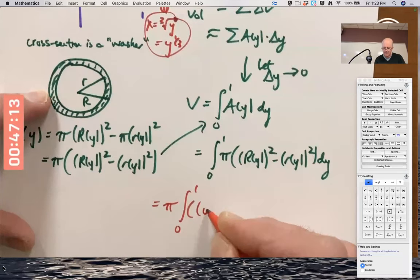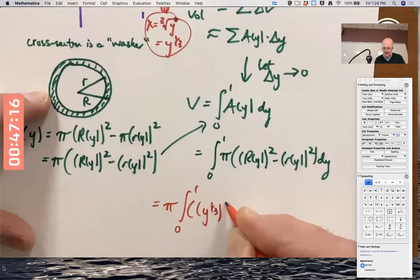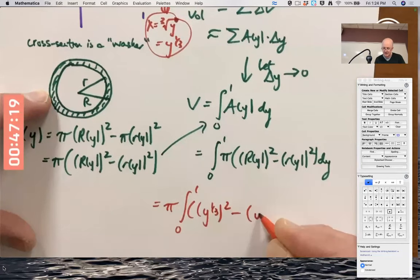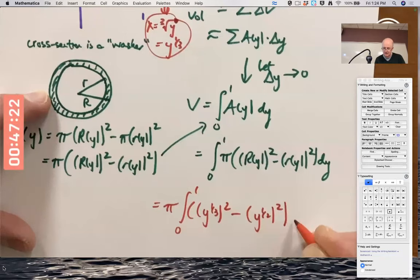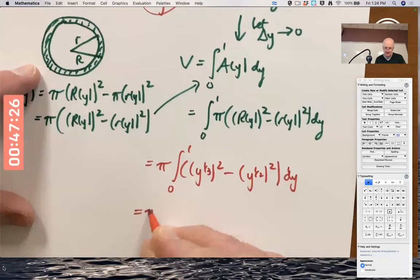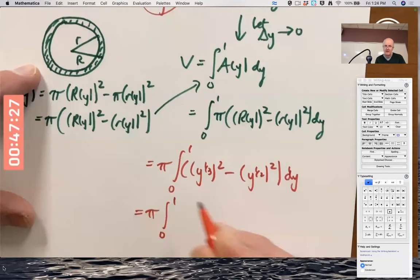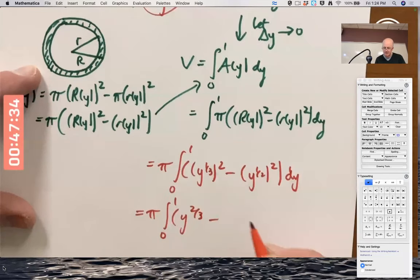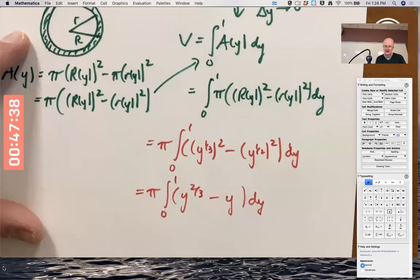Capital R of y is y to the one-third, and that gets squared. And little r of y is y to the one-half, and that gets squared. Y to the one-third squared. Multiply the exponents as y to the two-thirds. Y to the one-half squared. Multiply the exponents as y to the first. Now we're home free.